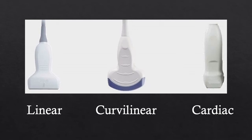There are many types of probes. The linear probe is flat, high-frequency, and best for superficial structures with very high resolution — it's the probe of choice for ultrasound-guided procedures including central lines and nerve blocks. The curvilinear probe is curved on top, lower frequency, allowing greater penetration into deep tissues — commonly used for abdominal imaging such as the FAST exam. The cardiac probe is a low- to mid-frequency transducer with a very small footprint, making it easy to fit between the ribs for echocardiography.